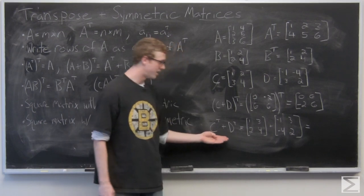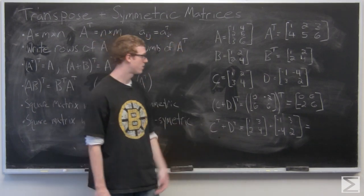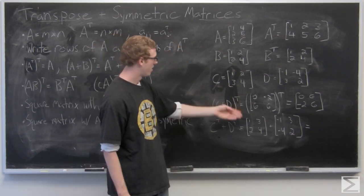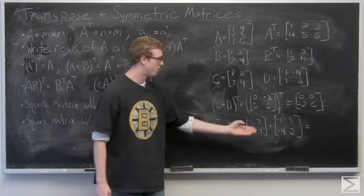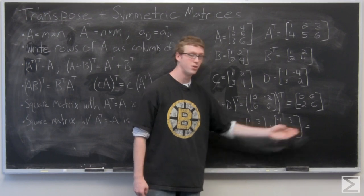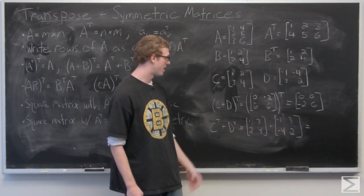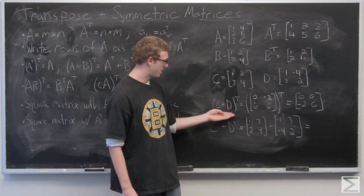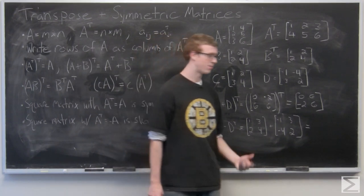Now we're going to take a look at C's transpose plus D's transpose. We've already done them out. C transpose is 1, 3, 2, 4. And D's transpose is negative 1, 3, negative 4, 2. Just add them together component-wise and that is going to be C plus DT equals CT plus DT.